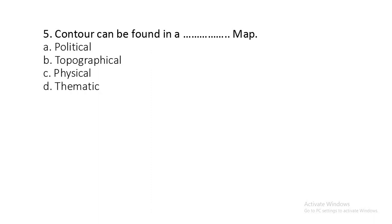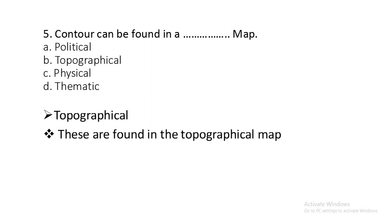Question number five: Contour can be found in a political map, topographical map, physical map, or schematic map? The contour can be found in a topographical map. These are found in topographical maps to represent features like mountains, lakes, valleys, etc.